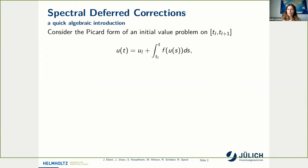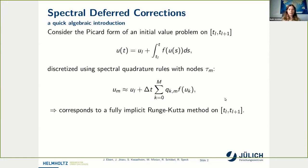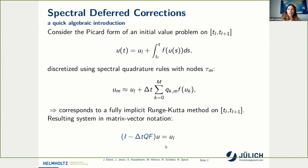We already heard about the solver spectral deferred corrections yesterday, so I will just give you a short algebraic introduction. We like to solve an ODE given in the Picard form, and we like to solve this ODE for one time step on the interval T_l to T_{l+1}. We discretize this time step by introducing further time nodes and use a numerical quadrature rule to approximate the integral. We end up with M equations — the sum over the quadrature weights times the right-hand side of the ODE — and this can be written in compact matrix-vector notation where the matrix Q holds the quadrature weights.